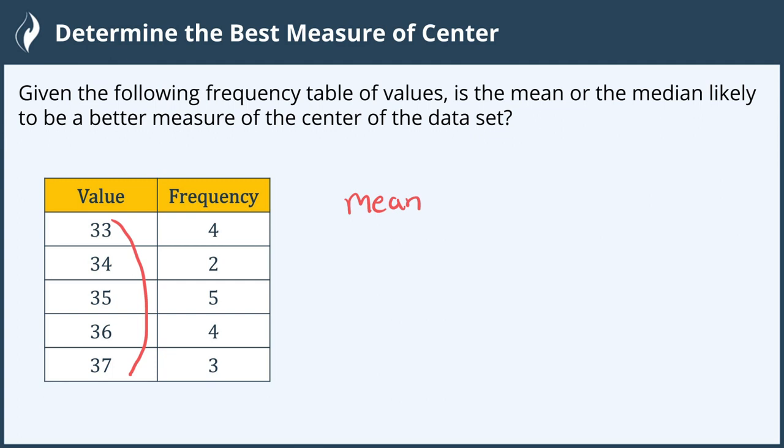If we had had a number very low or very high, it would pull our mean either lower or higher than it really would be, and in that case we would choose the median.